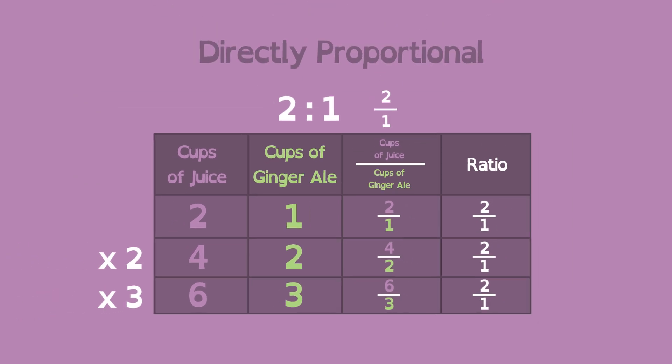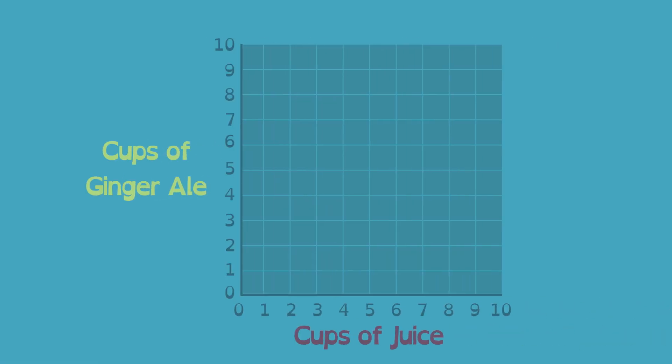Another way to see proportions is with a graph. We can plot 2 cups of juice and 1 cup of ginger ale like this. We can show how Carl doubles and triples the original recipe like this.